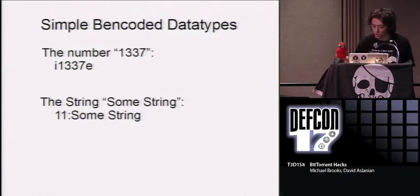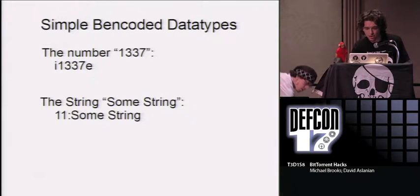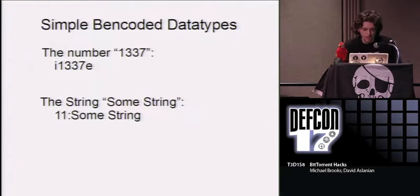All the data used in BitTorrent communication is B-encoded. The two simple data types are shown here. The first one that you see is an integer. The second one that you see is a string. As you can notice, with a string, the size of the string precedes the colon. And with the integer, the integers can be of any size. They start with an I and end with an E.